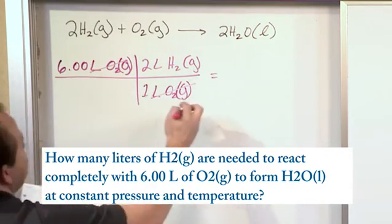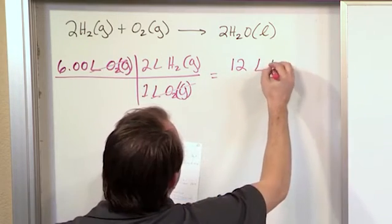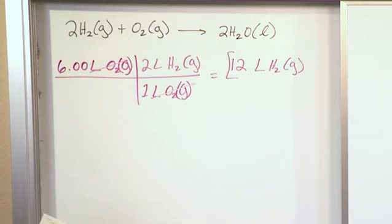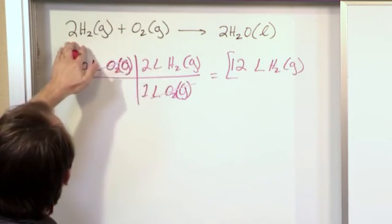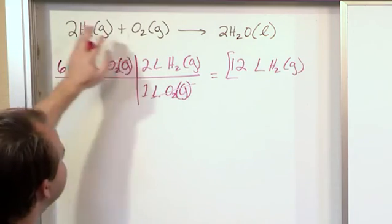So what you do is take six times two and you're going to get 12. You can just round that, drop all the decimals, 12 liters of H2 gas. Very simple problem. You just read it as if it were volume ratios, which is what it is. When you have constant temperature and pressure, it does not matter.